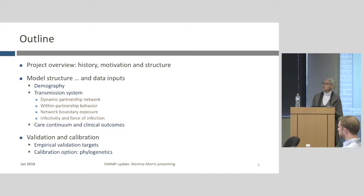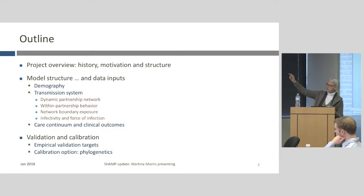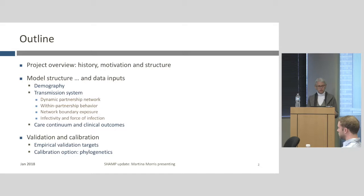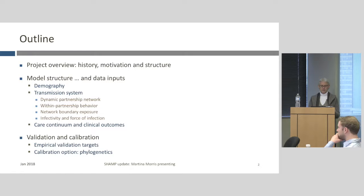There are three basic components to the modeling that require inputs: local demographics, and then the structure of the transmission system. The transmission system has many components — the dynamic partnership network, within-partnership behaviors, network boundaries, and boundary exposure. Then there's infectivity and force of infection. That forms the transmission system, which I'll speak primarily about today. We also have the care continuum and clinical outcomes — where we have levers for prevention and planning to see how changes affect transmission dynamics of the whole system.